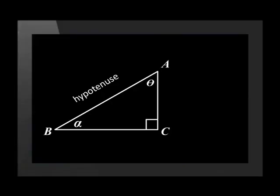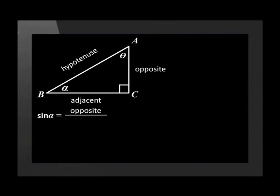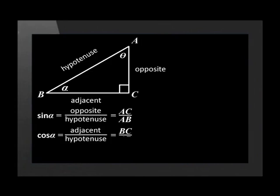Now that we've established the relationships and ratios from angle A, let's do it from angle B. We're going to give angle B the size of alpha. The hypotenuse is always opposite the right angle. AC is opposite alpha, and BC is adjacent to alpha. This means that sin of alpha is equal to opposite, which is AC over hypotenuse, which is AB. Cos of alpha is equal to adjacent, which is BC over hypotenuse, which is AB. And tan of alpha is equal to opposite over hypotenuse.